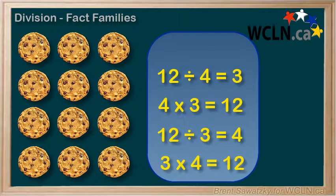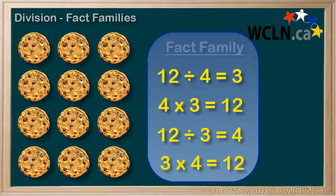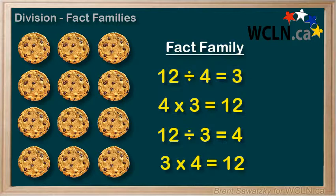We have 4 interrelated facts. And we can call this a fact family. There are 12 cookies altogether, and they can be organized as 4 groups of 3, or 3 groups of 4.